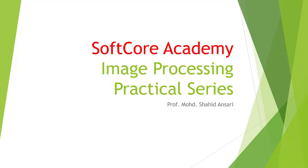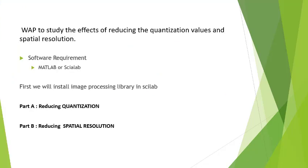Now we will start with the first practical, which is to write a program to study the effects of reducing the quantization values and the spatial resolution of an image. In an image, we have a gray level and we have spatial coordinates. This practical basically deals with reducing the quantization values and the spatial resolution of the image.